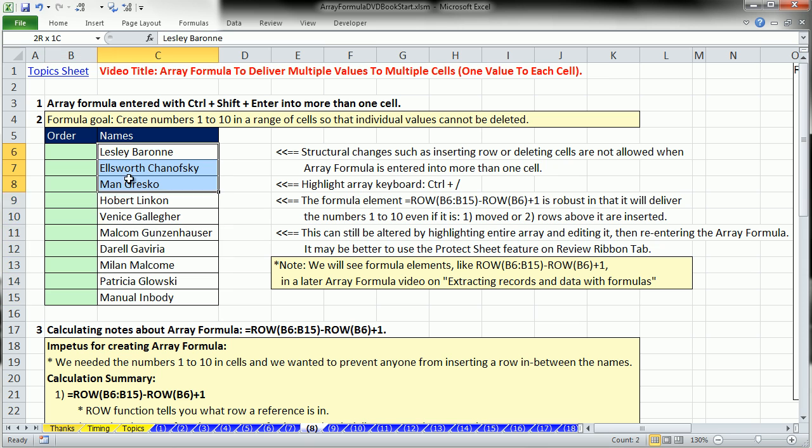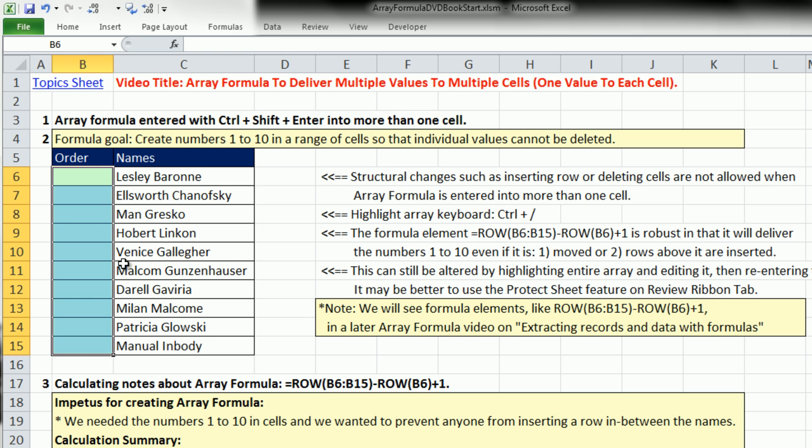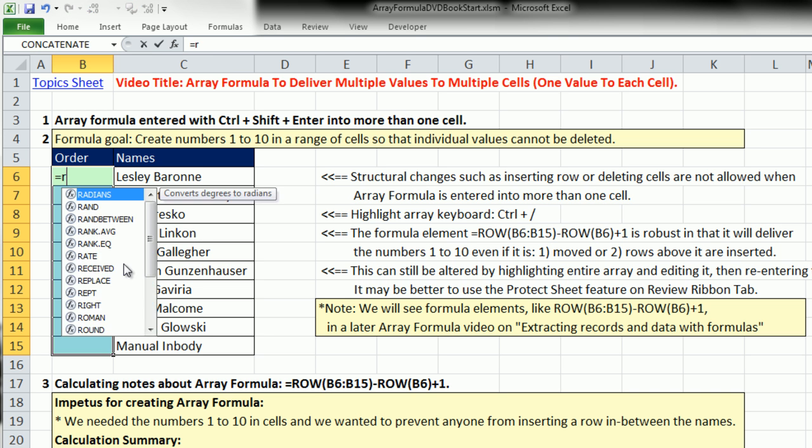Here are some names. We want to enter numbers 1, 2, 3, 4, 5, but we don't want anyone to delete one of the rows here, or insert any row. So I want the numbers 1 to 10 here. Here's how I'm going to do it. I'm going to highlight all the cells in advance and say equals row.